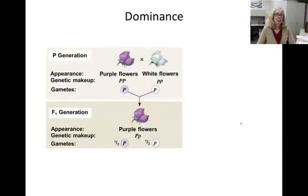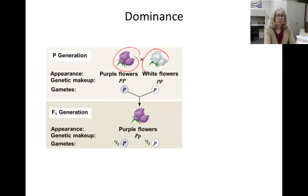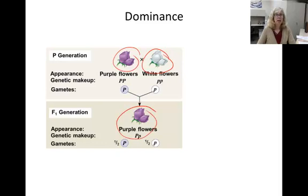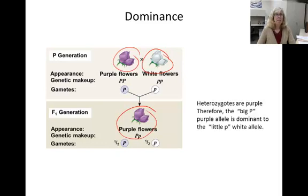Now let's spend some time looking at dominance. When dominance is taught the way that Mendel understood it, it's explained like this: true breeding purple flowers are crossed with true breeding white flowers, and the F1 offspring are heterozygotes and are still purple, and that means that the purple allele is dominant to the white allele.